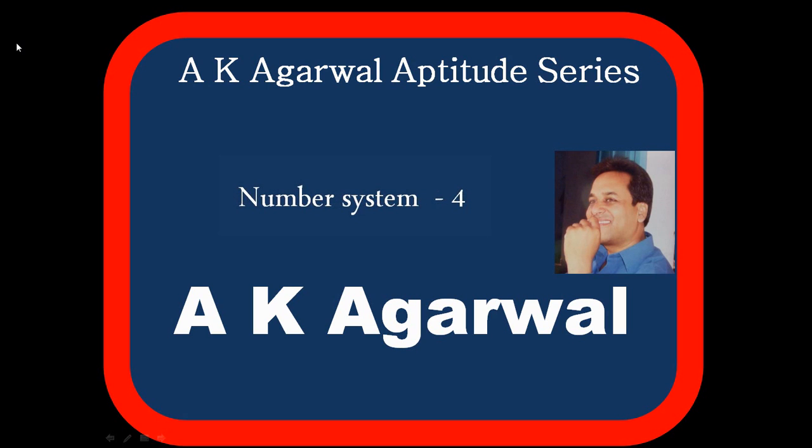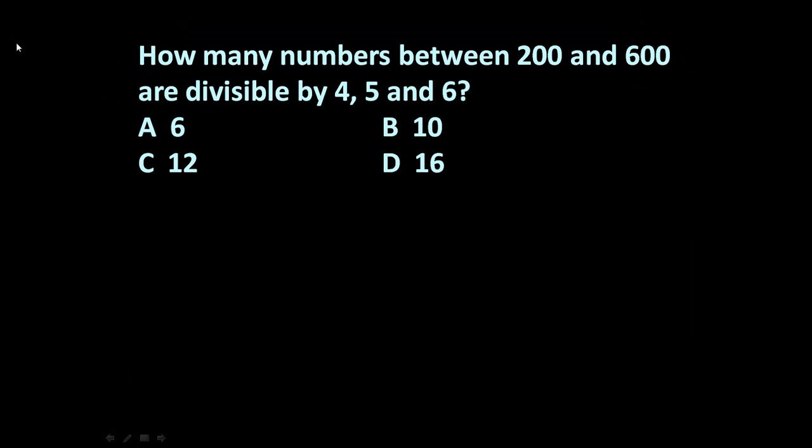Hello friends, welcome to AK Agarwal Aptitude Series. In this session, we are going to learn a technique for solving a problem on number system. Here the given problem is: How many numbers between 200 and 600 are divisible by 4, 5, and 6? Four options are given.